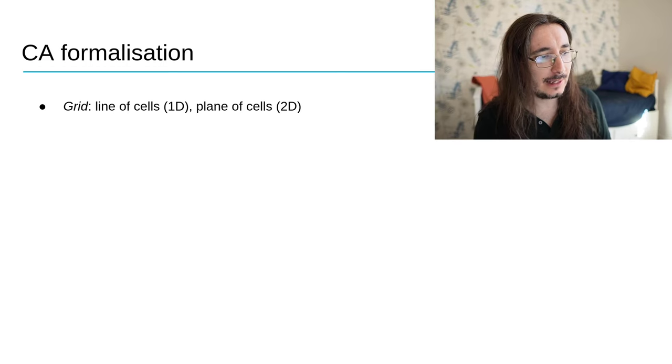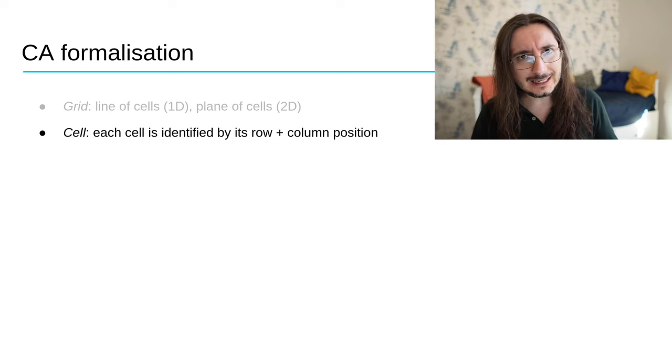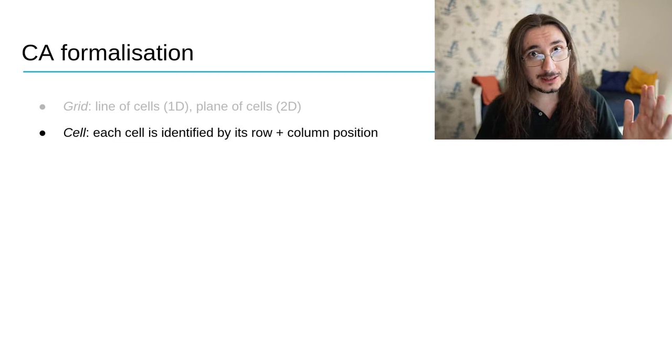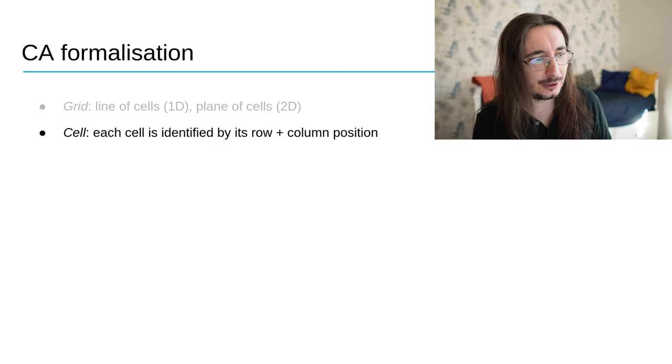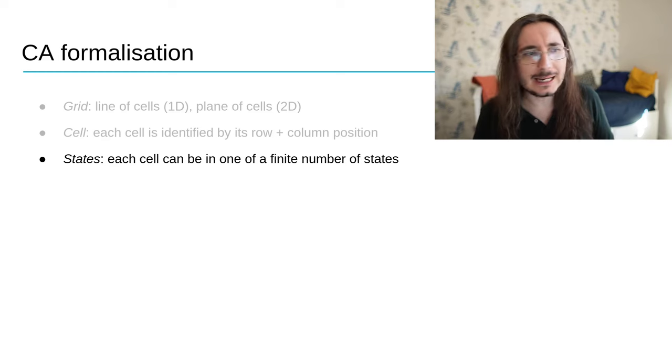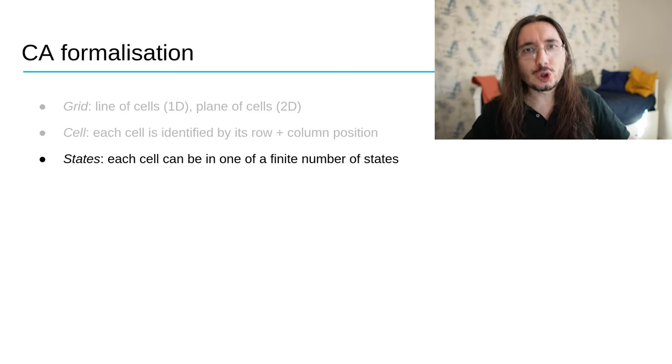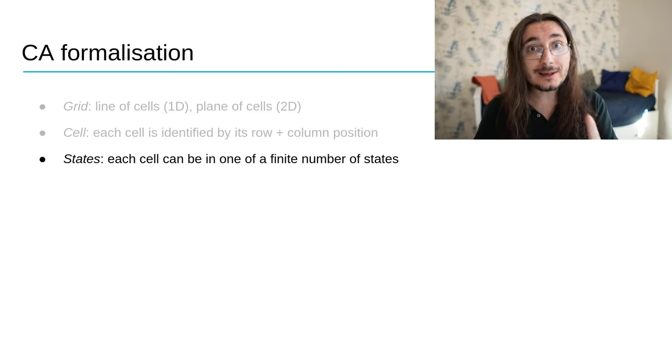Then you have the cell itself. And each cell in a two-dimensional cellular automaton is identified by its row position and column position. You can think of it as a matrix in a mathematical term. Then you have states. What are states? Well, states are the different conditions a cell can find itself into, and each cell can take on only one out of a finite number of states.